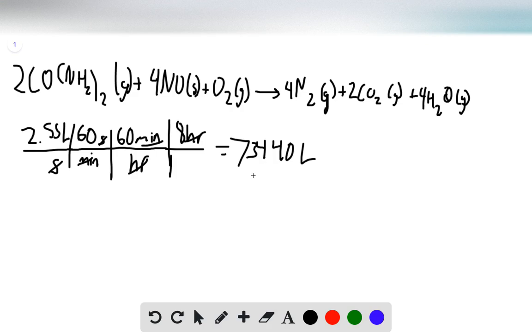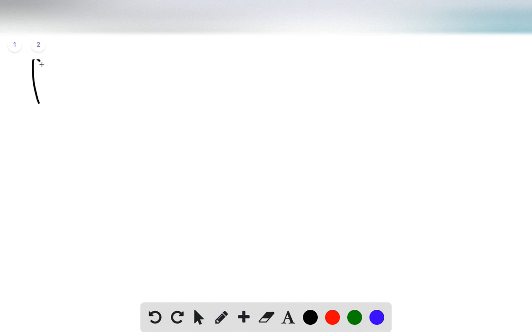Now we can use the ideal gas law to find the amount of urea that we need. The ideal gas law is PV equals NRT.